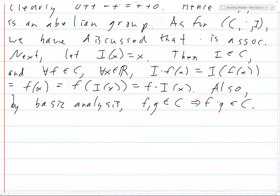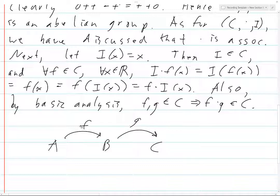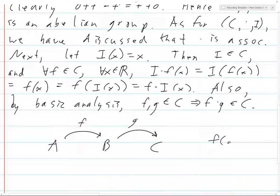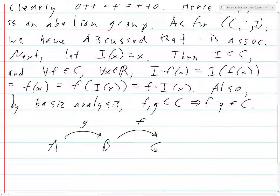Closure under composition might actually be easier to see using the topological definition of continuity — that inverse images of open sets are open. Say F goes from X to Y and G goes from Y to Z. Then to show G composed with F is continuous: take an open set in Z, its inverse image under G is open in Y, and the inverse image of that under F is open in X. So the composition pulls an open set in Z back to an open set in X.